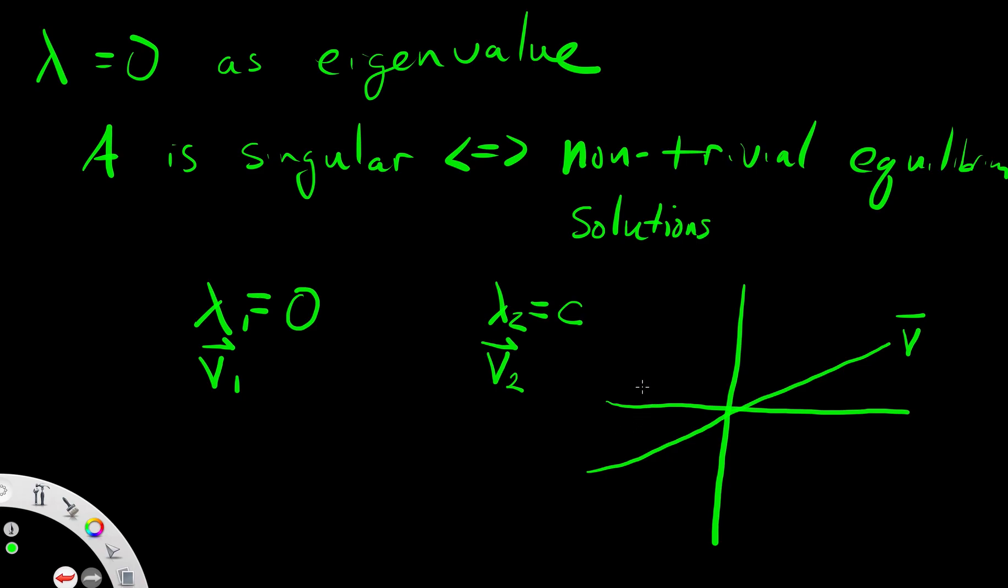Then, what I'm also going to have is all other solutions are going to be on lines with slope V2, and depending on the sign of lambda, they are all going to either drift towards the equilibrium solution or away from the equilibrium solution.